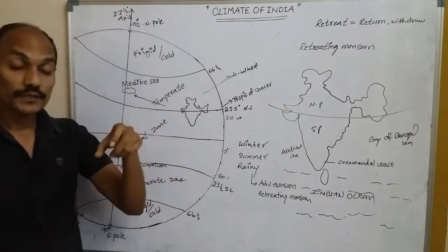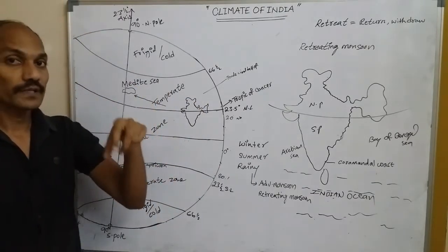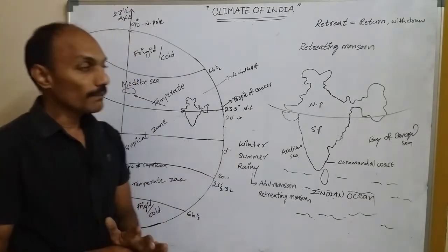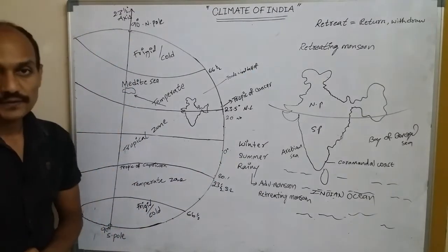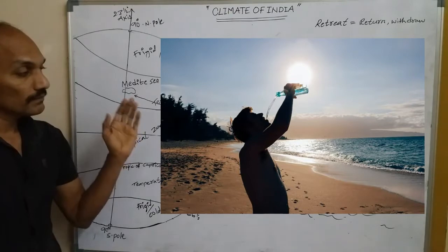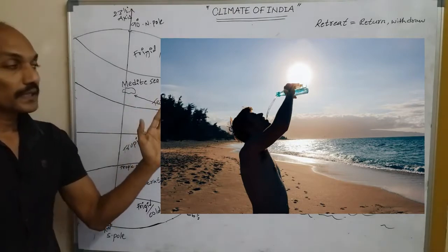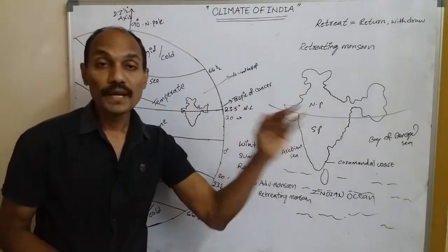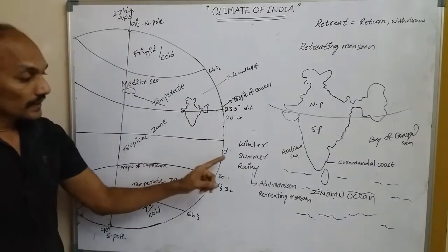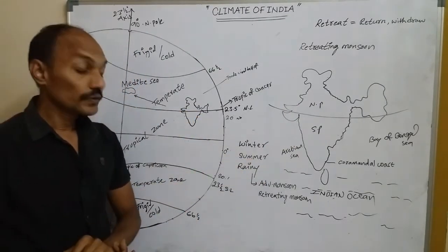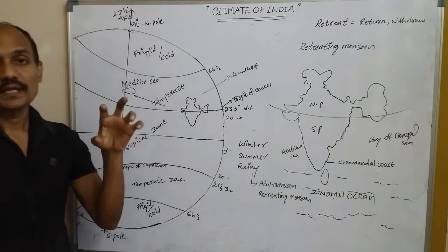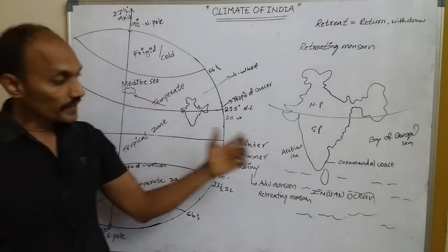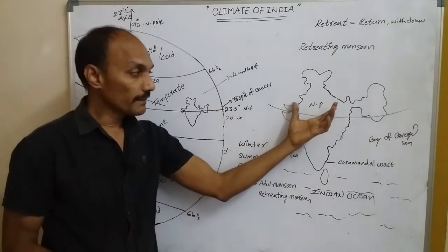January is the coldest month during the winter season. Now let's move on to summer. Summer is the hottest season — it starts from March and continues till May. May is the hottest month in summer.